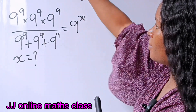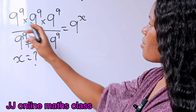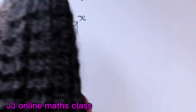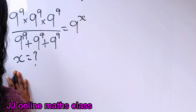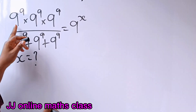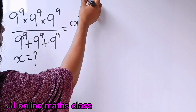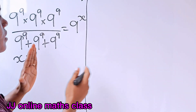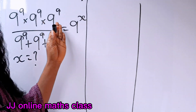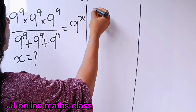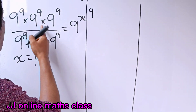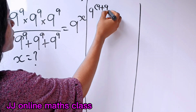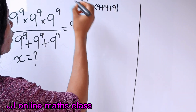We can rewrite the numerator. We are going to pick one base, which is nine, and we are going to add all the powers: nine plus nine plus nine plus nine.